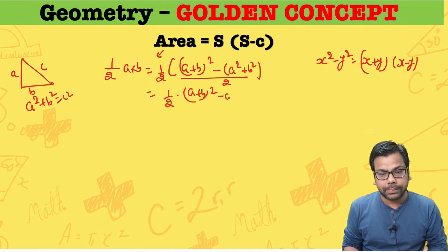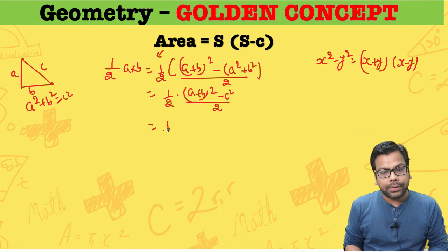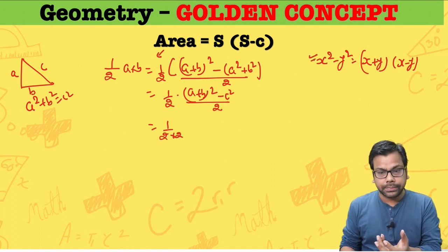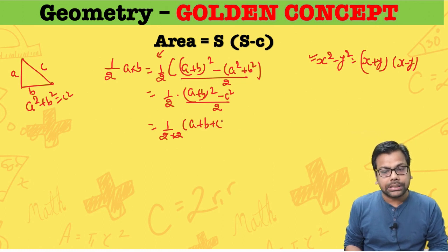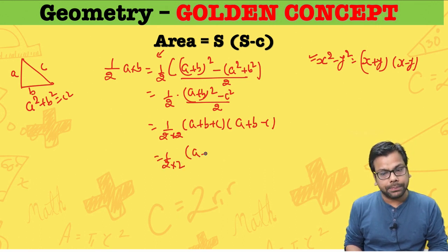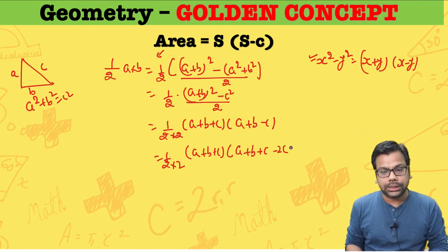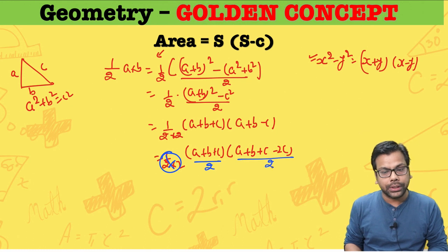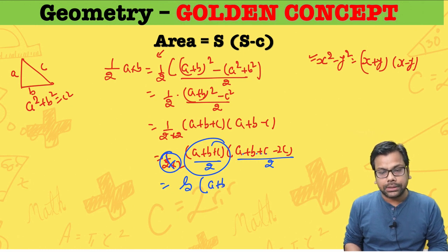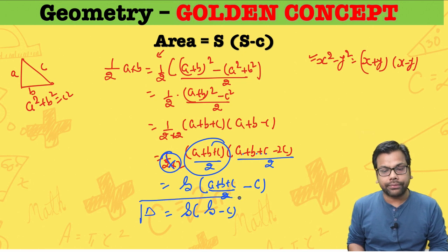Now, half into [(a plus b) squared minus (a squared plus b squared)] divided by 2. In a right-angled triangle, a squared plus b squared equals c squared, so we replace it with c squared. We then factor (a plus b) squared minus c squared using the identity as (a plus b plus c) into (a plus b minus c). Dividing each factor by 2: (a plus b plus c) over 2 is the semi-perimeter s, and (a plus b plus c minus 2c) over 2 equals s minus c. This proves that Area equals s into (s minus c).